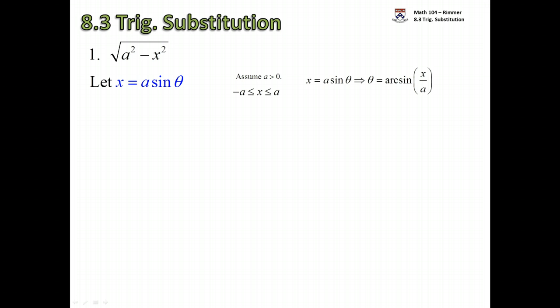If we do the substitution x = a·sin(θ), then solving for theta we divide by a and take the arc sine. The arc sine has a range of values from minus pi over 2 to pi over 2. The angles involved must be between minus pi over 2 and pi over 2. This comes from restricting the sine function — since it's periodic we restrict it by convention to minus pi over 2 to pi over 2, which is the first and fourth quadrant. In the fourth quadrant, angles are labeled from minus pi over 2 to zero.